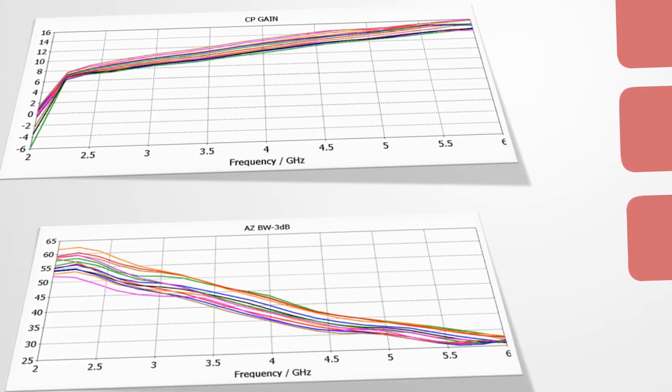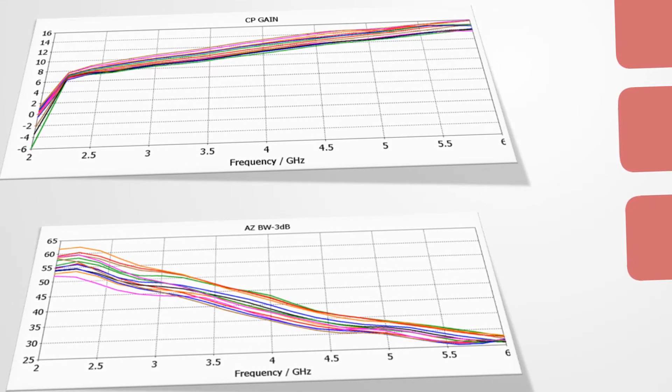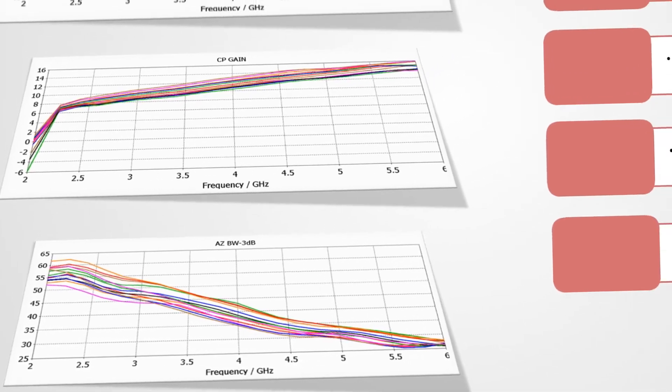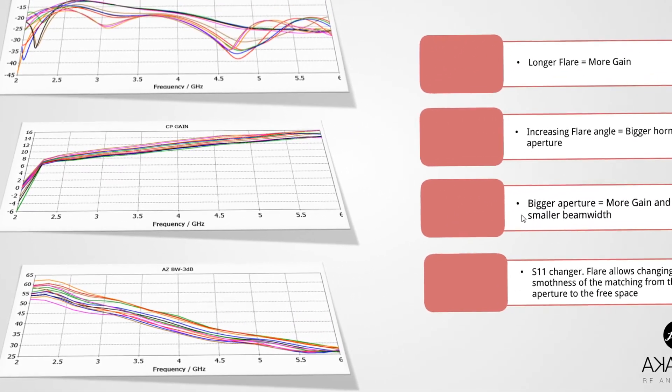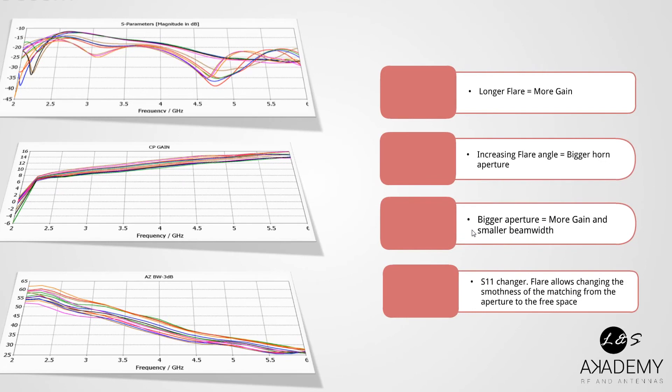So to make it easier to understand, to make it precise: here we got longer flare means more gain. Increasing the flare angle means bigger horn aperture, and therefore bigger aperture means more gain, and for that we got to make smaller the beamwidth.